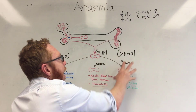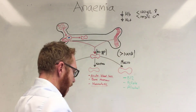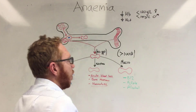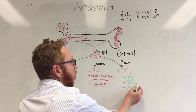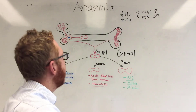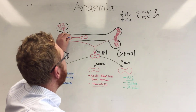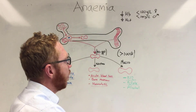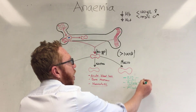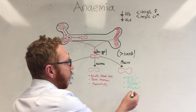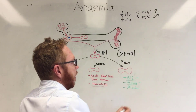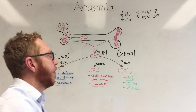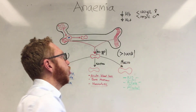The macrocytic category involves big cells — it's a problem with the way the red blood cell is maturing. This can be caused by a B12 or folate deficiency, which causes problems with the DNA in the nucleus and affects maturation, making these big cells also immature. Another cause of macrocytic anemia is alcohol abuse, but those are usually big cells that are mature.